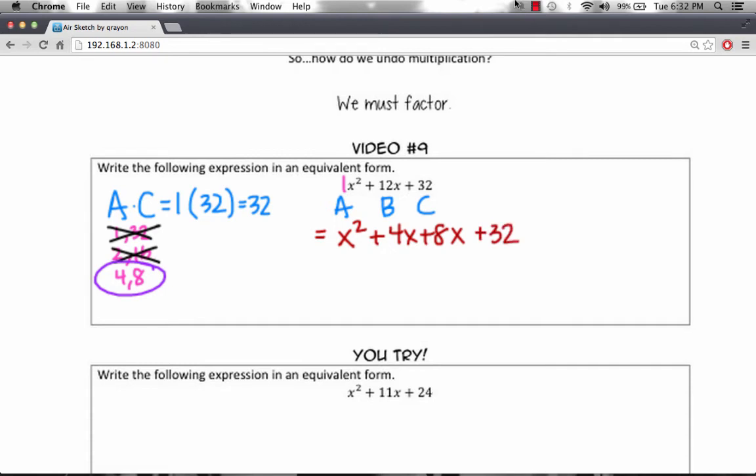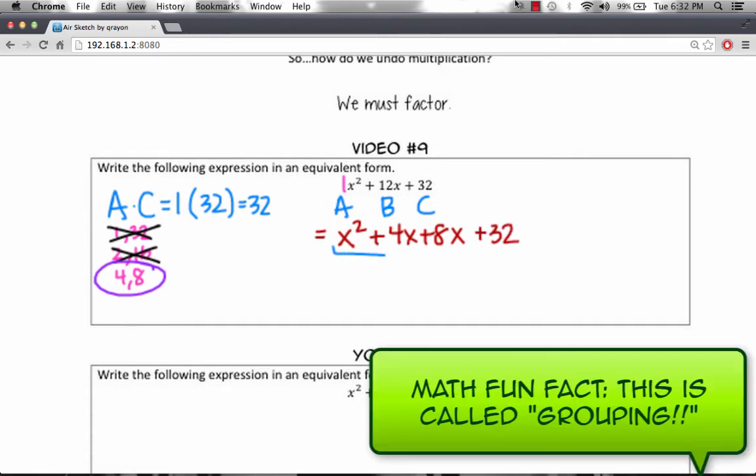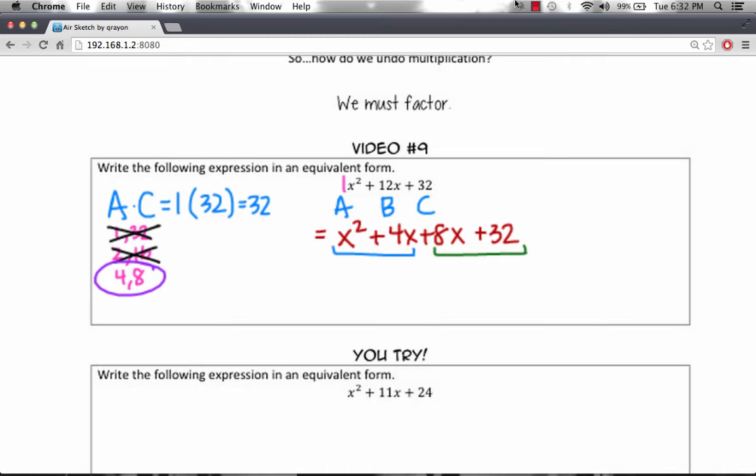What we want to do now is look at the left two terms and the right two terms. We'll focus on the left first. What do x squared and 4x have in common? We can factor out an x from each of these terms. If we factor out an x, we have x plus 4.